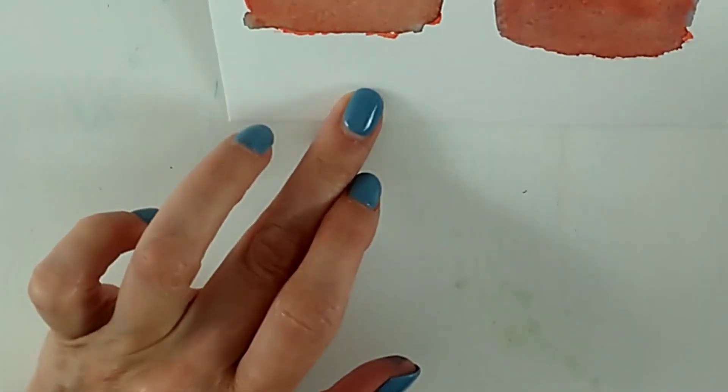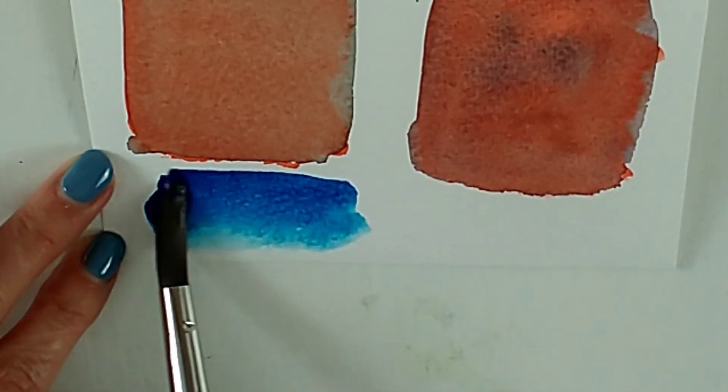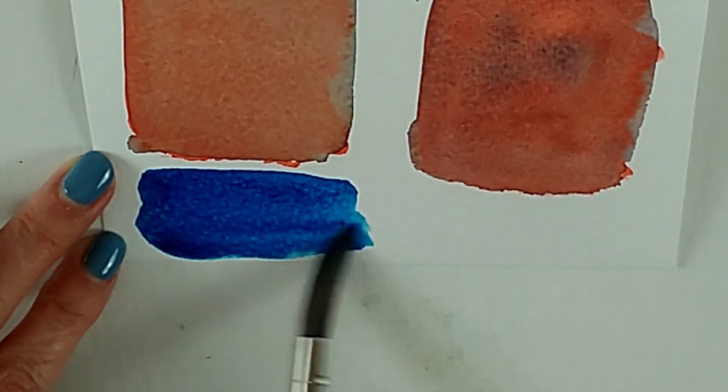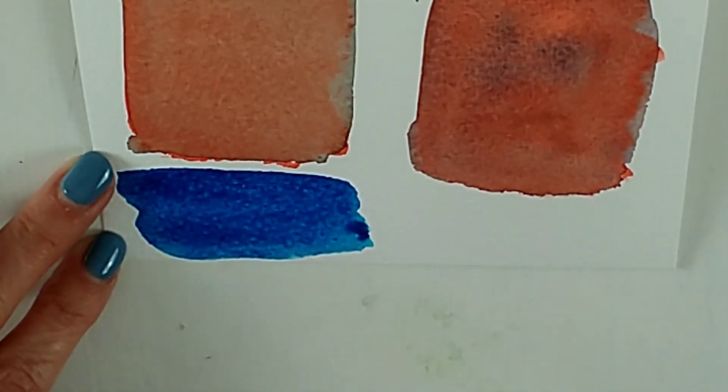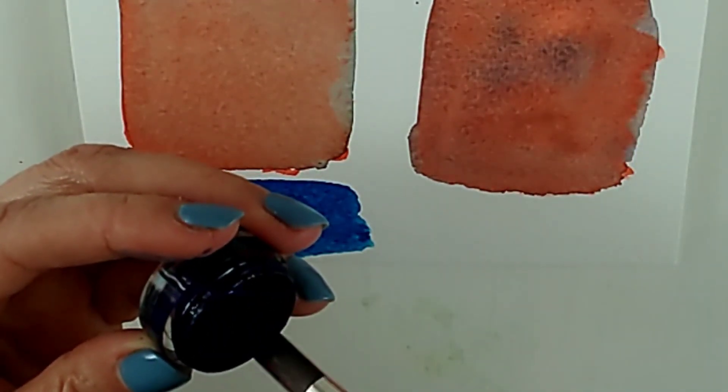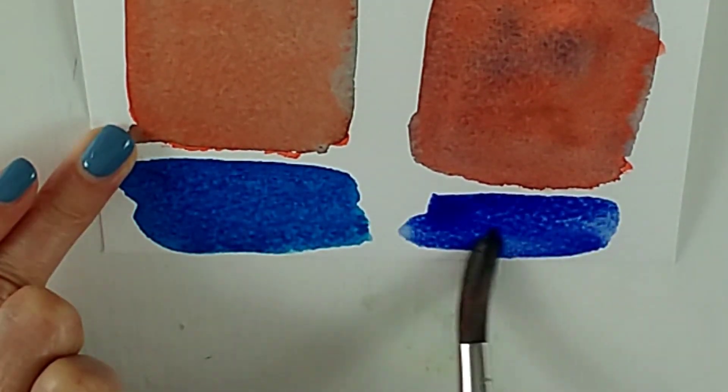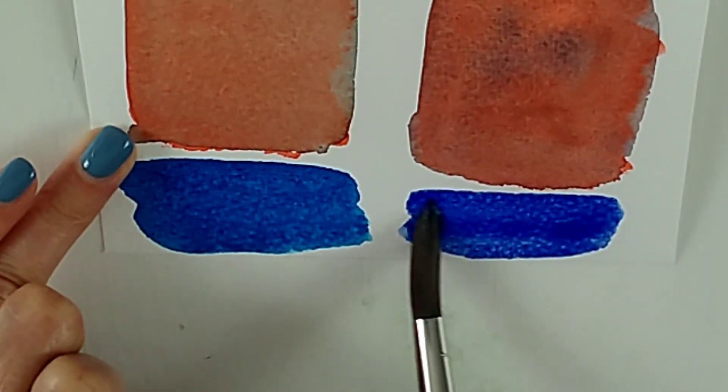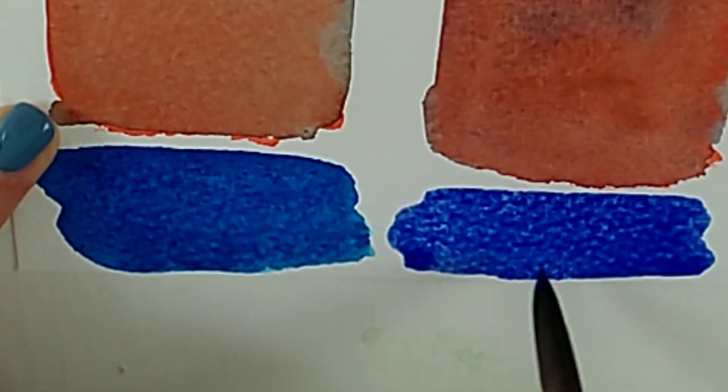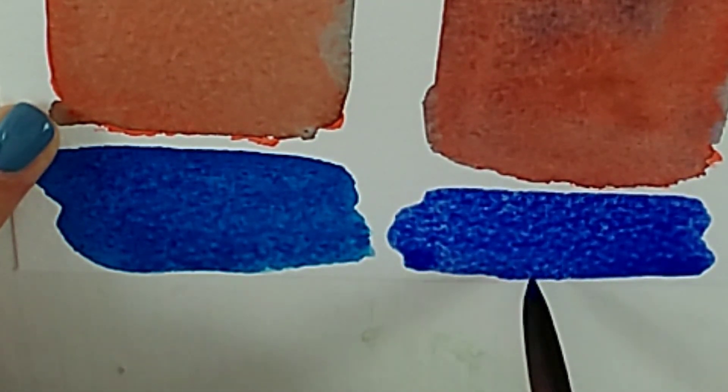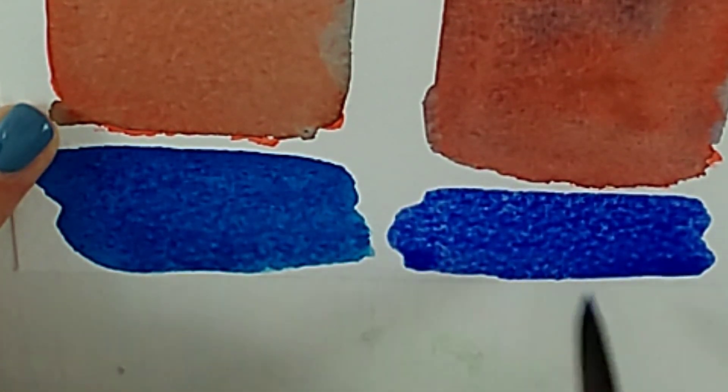Let me show you the difference between them if I swatch them. So here's the phthalo blue that I used for this one. Of course I watered it down a lot, but it's a very bright clear pigment. For this one I used some ultramarine and it's a much more granular pigment. It has heavy granulation, which means that it has heavier pigments that will form speckles as it dries.